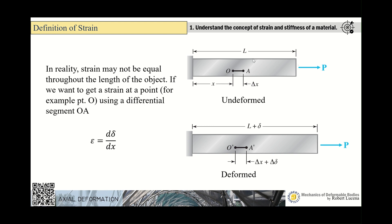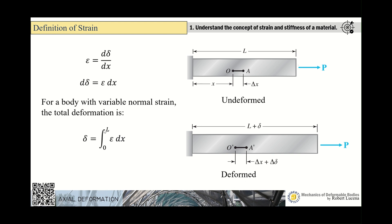To get the strain at differential segment OA, we need the differential length dX. The strain for this segment is a differential strain: differential deformation over differential length. To get total deformation throughout the length, we integrate strain·dX from zero to L, giving us the total deformation of the object.